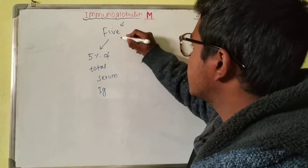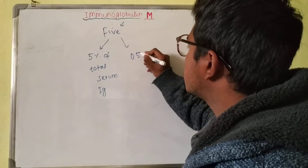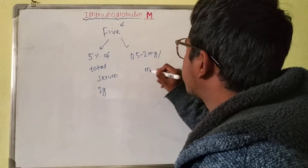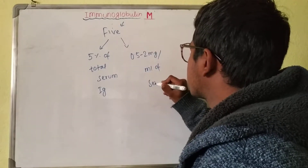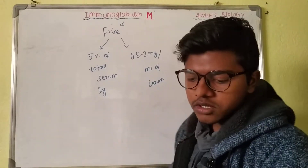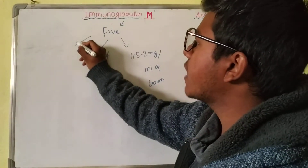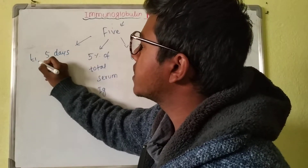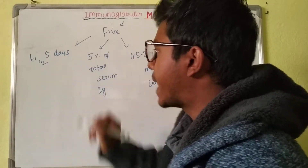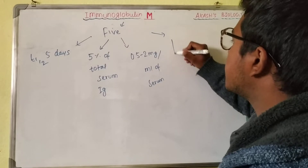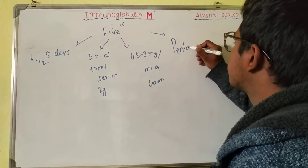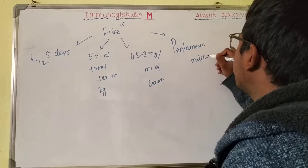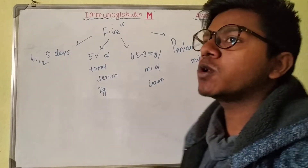Similarly, it is present at 0.5 to 2 mg per ml of serum — again the rule of five. Third, its half-life is also five days. And it is a pentameric molecule. If you know these five things, Immunoglobulin M can be mastered.